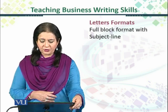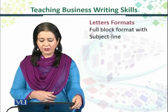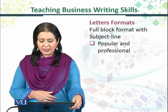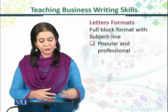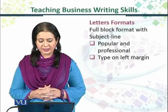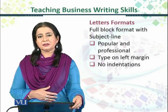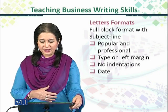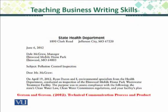The second type of format for letter writing is the full block but with the addition of a subject line. This is considered to be more popular and more professional in business writing. Again, all the information is typed on the left margin of the page. Just like the full block style, there are no indentations. The date and the complimentary close as well as the signature are all on the left hand side. You can see that almost all of the same rules are followed as the full block, with the exception that there is a subject line — the subject says 'Subject:' and then 'pollution control inspection.'